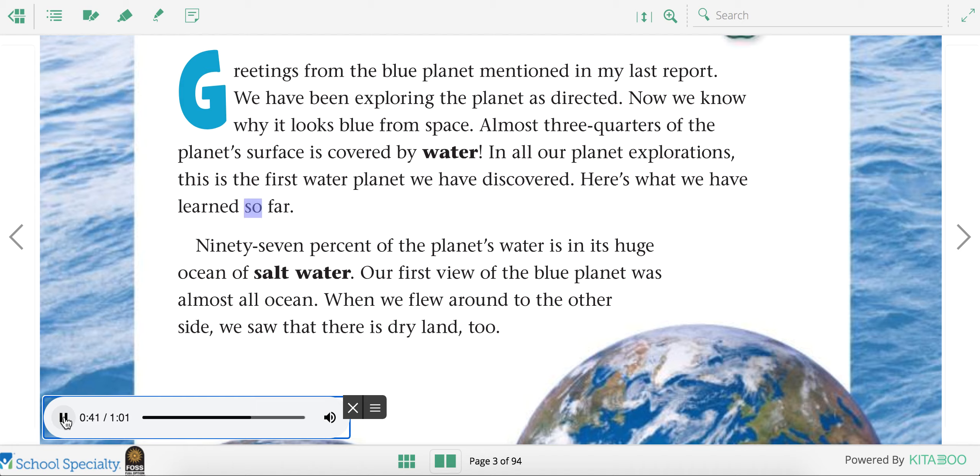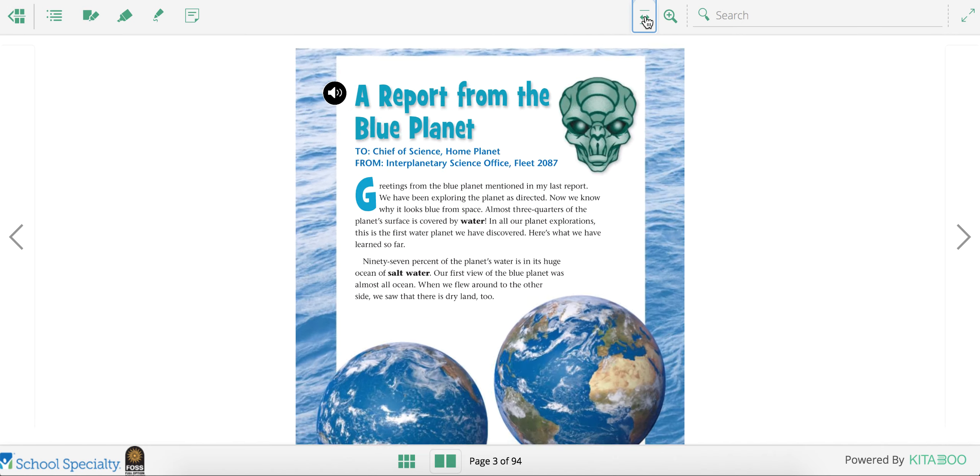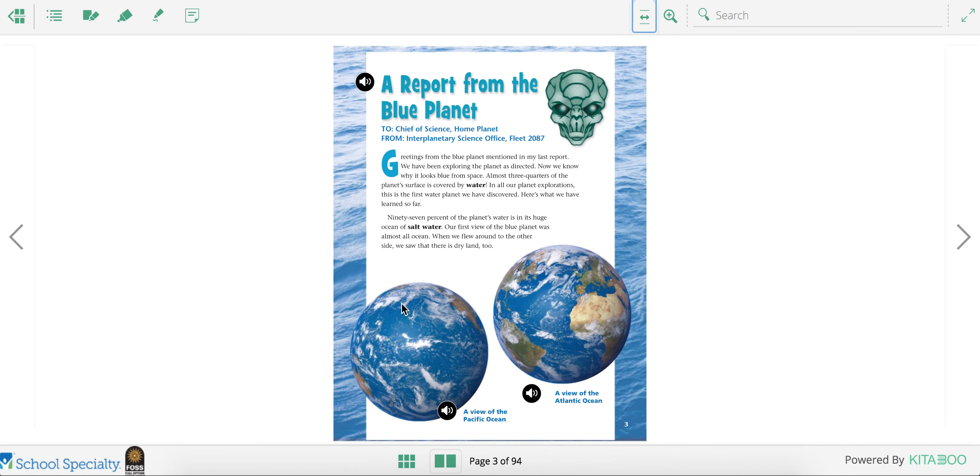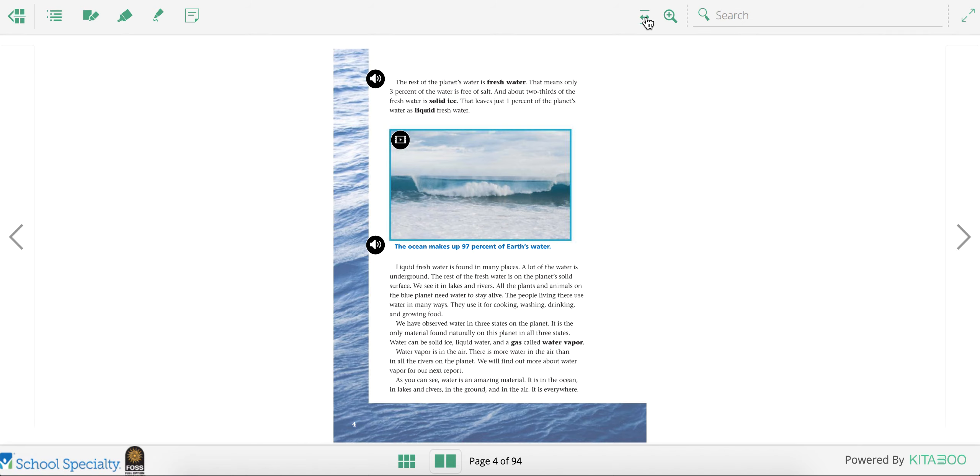Here's what we have learned so far. Ninety-seven percent of the planet's water is in its huge ocean of salt water. Our first view of the blue planet was almost all ocean. When we flew around to the other side, we saw that there is dry land, too. So they must have seen the Pacific Ocean at first, and it looks all blue. From the Atlantic side, you see more land, but the majority of Earth is covered with water, salt water to be exact.